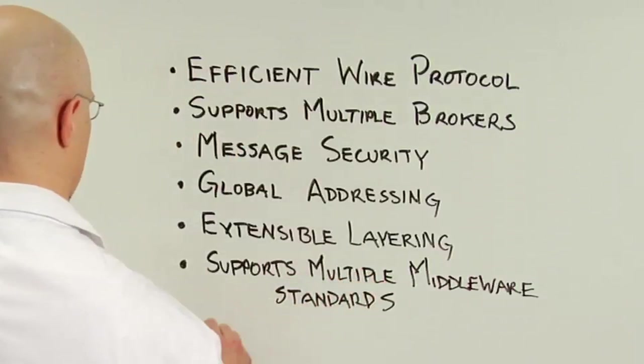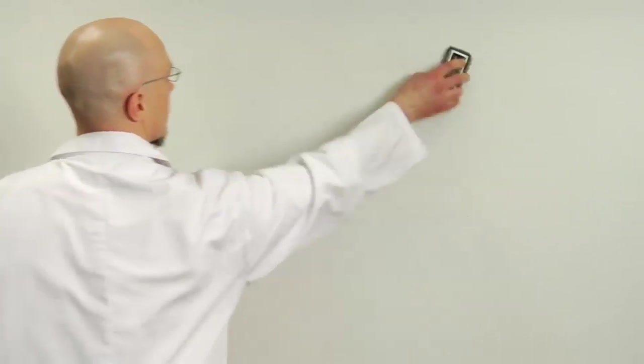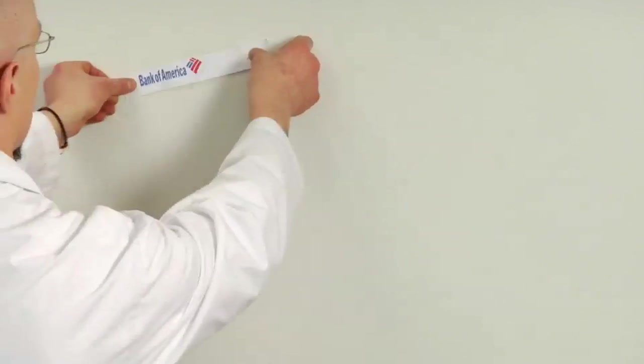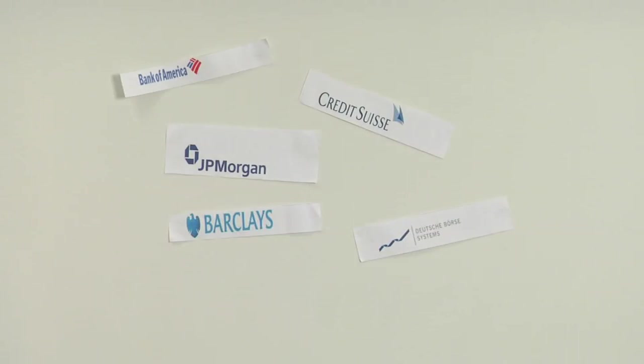The consortium that has created AMQP version 1.0 is composed of financial institutions as well as solution vendors. The financial institutions include Bank of America, JP Morgan, Credit Suisse, Barclays Bank, Deutsche Borsa Systems, and Goldman Sachs.